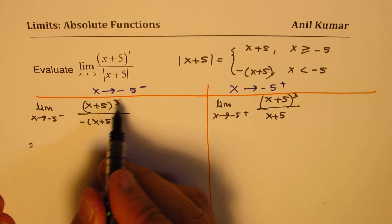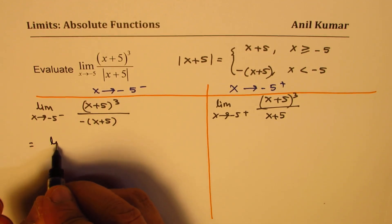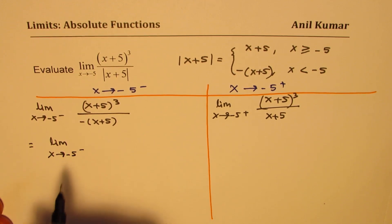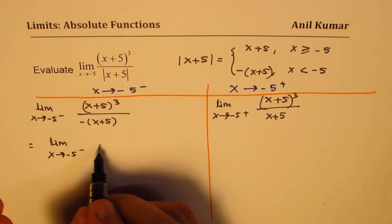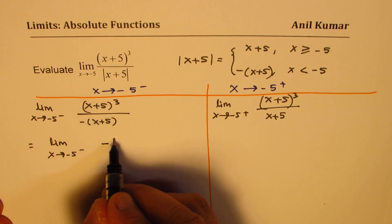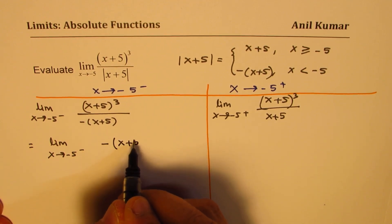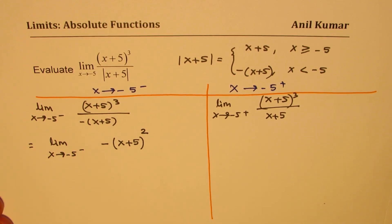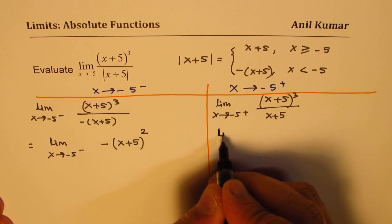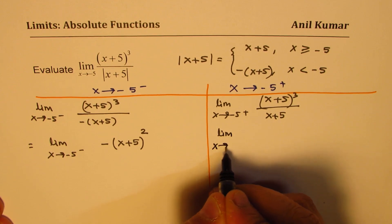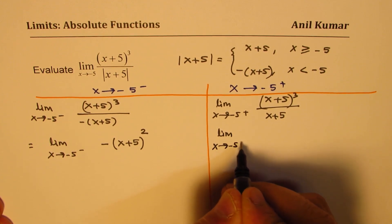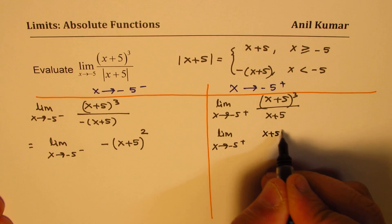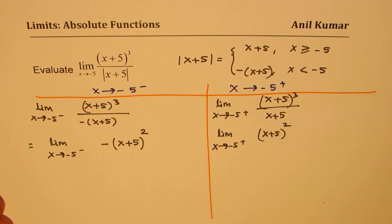Cancelling one factor of (x+5) from numerator and denominator: on the left side we get limit as x approaches minus 5 from the left of negative (x+5)². On the right side, one factor cancels and we get limit as x approaches minus 5 from the right of (x+5)².